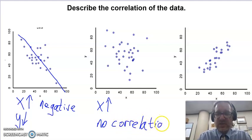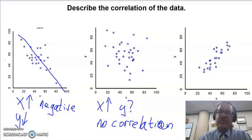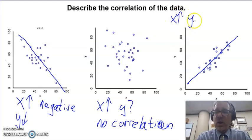Because X gets bigger, and no correlation, and Y just kind of does, I don't know what Y is doing. On this graph, we notice as X goes to the right, Y goes up. So as X gets bigger, Y also gets bigger. And this would be a positive correlation.